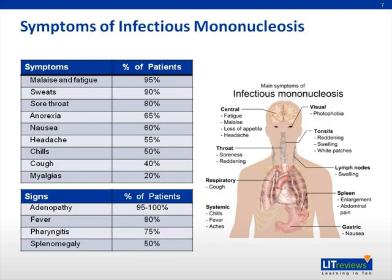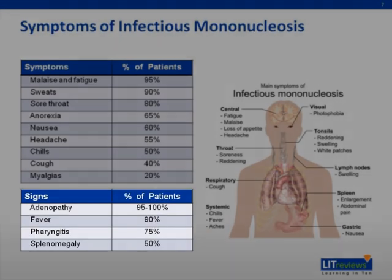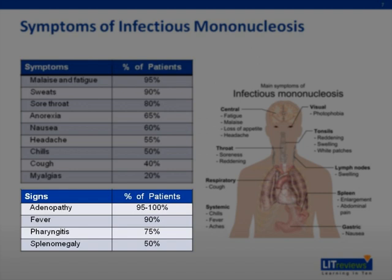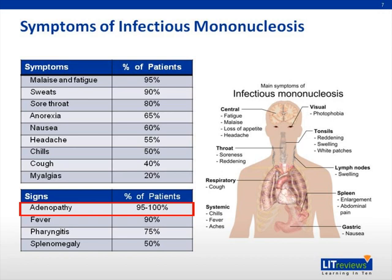This is the list of common signs and symptoms of mono. None of these are very specific — malaise, fatigue, sweats, sore throat — things you can find in the flu or the common cold. But the constellation of these together and their severity would make you suspicious for mono. If suspicious for mono, you want to look for lymphadenopathy, swollen lymph nodes particularly in and around the neck and throat. Adenopathy has 100% sensitivity, so if you don't have adenopathy, it's highly unlikely to be mono.